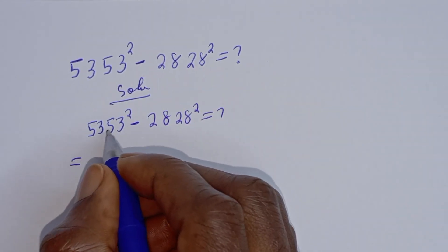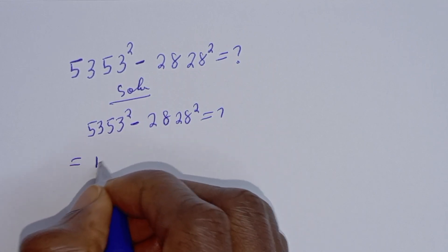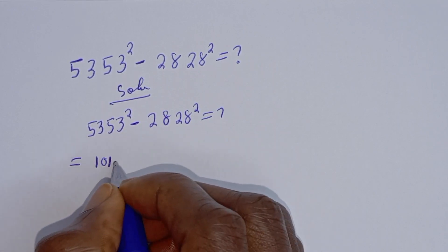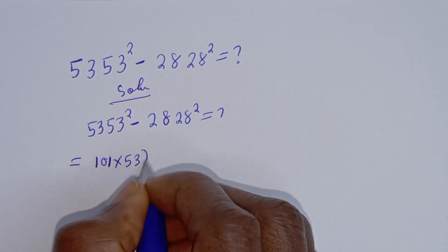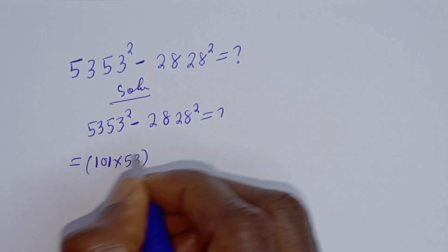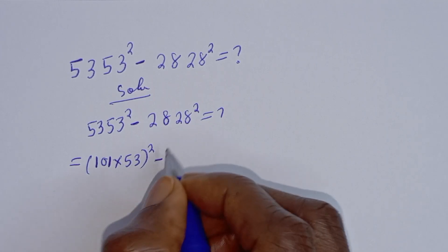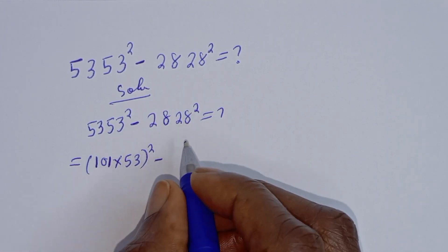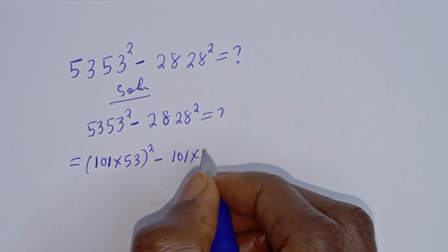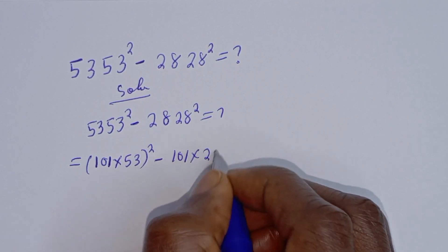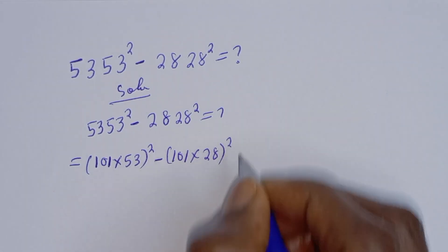5050 square can be written as 101 multiplied by 50, all squared, minus 2828 square, which can be written as 101 multiplied by 28, all squared.